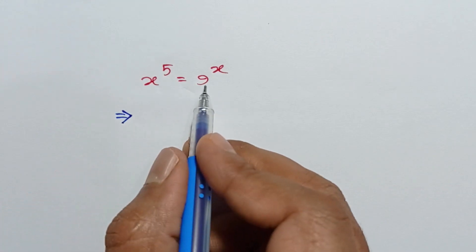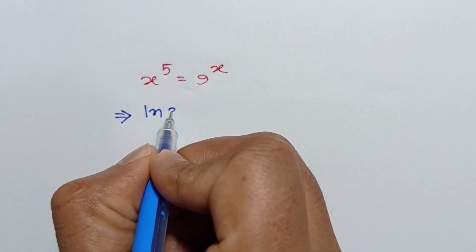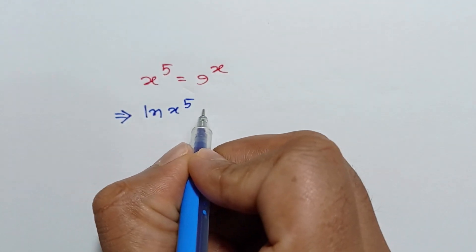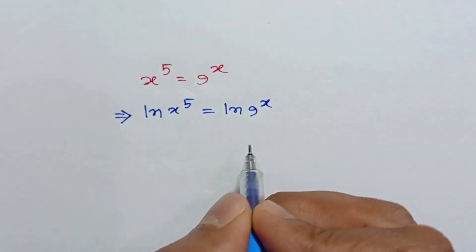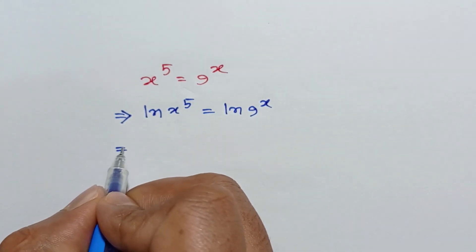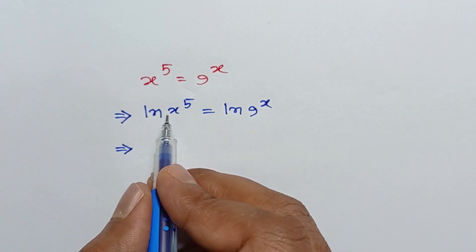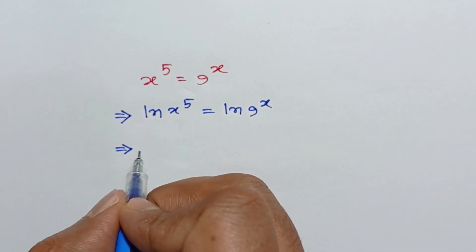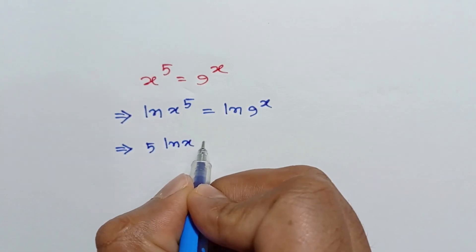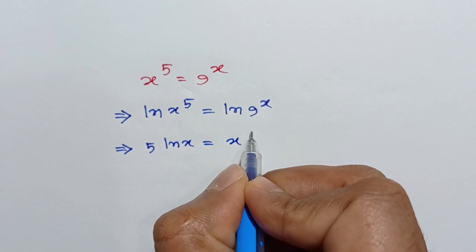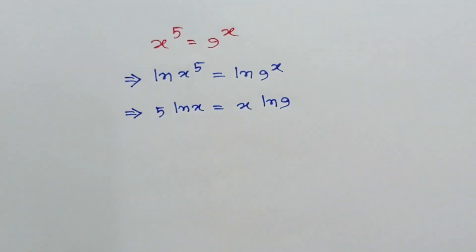Taking ln of both sides we can write ln of x to the power 5 is equal to ln of 9 to the power x. According to the formula of logarithm we can write it as 5 ln x is equal to x ln 9.